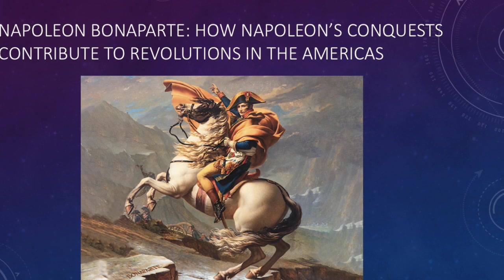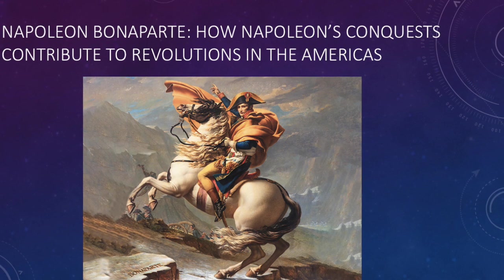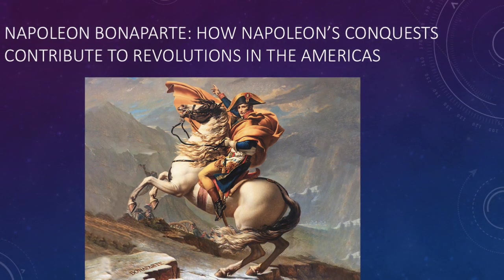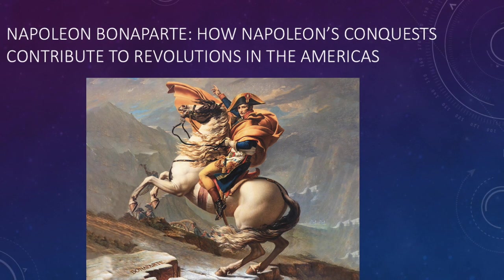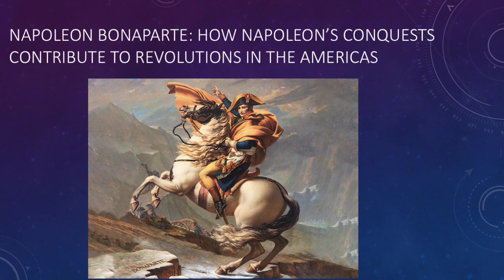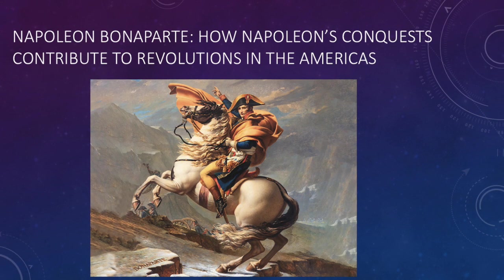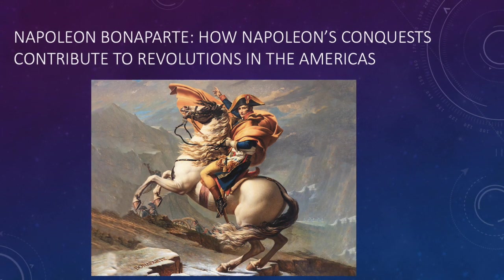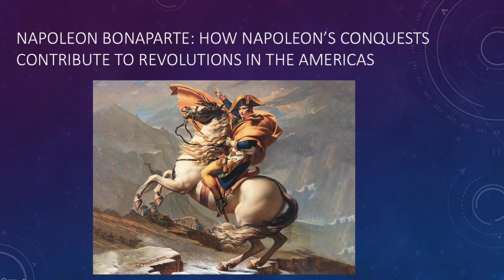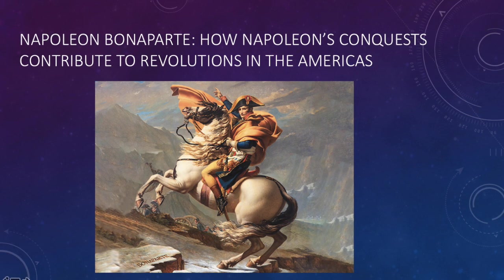Napoleon is eventually defeated, and in 1815 the Congress of Vienna declared that a balance of power should be maintained among the existing powers of Europe in order to avoid the rise of another Napoleon. They effectively reinstall monarchies — the Congress of Vienna is a pushback against Enlightenment revolutions and Enlightenment ideals destabilizing monarchies. It's almost a reset.